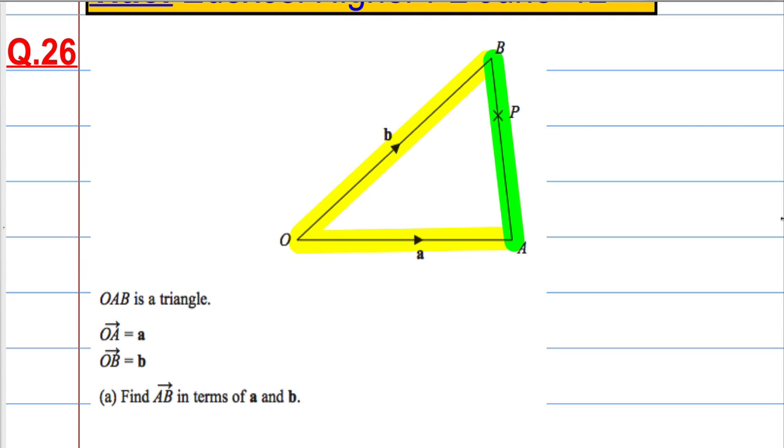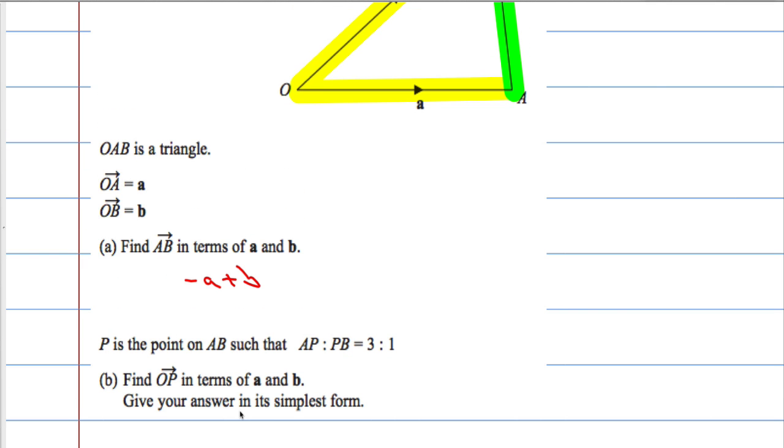So, well, from O to A is the vector A. That means from A to O is the vector minus A. And then I'm going to go from O to B, which is simply the vector B. So the answer is negative A plus B, or if you want, B minus A.